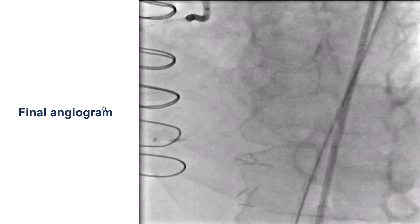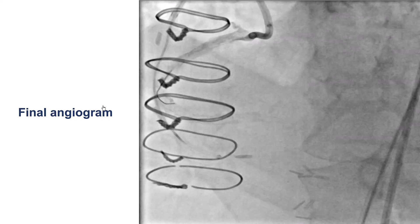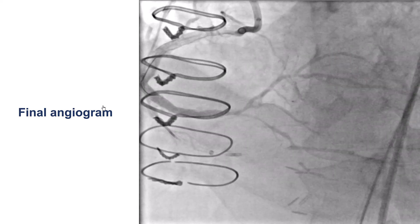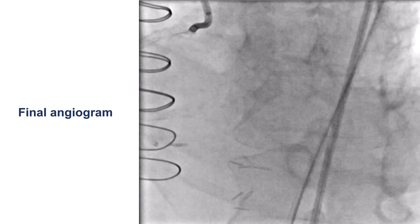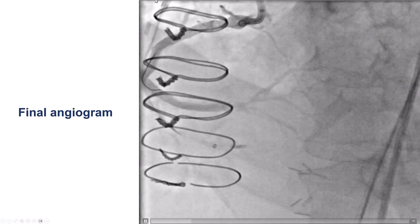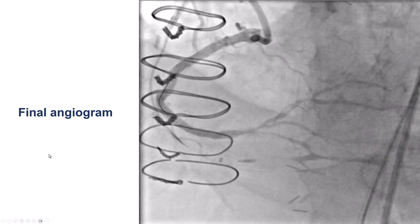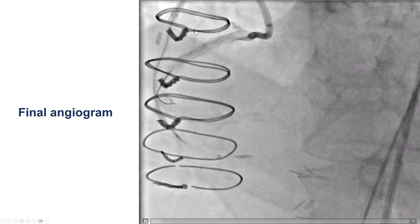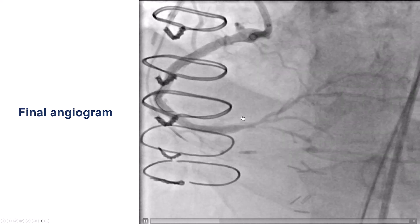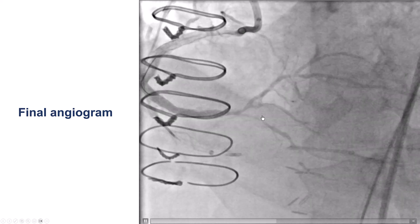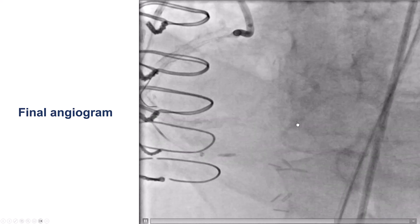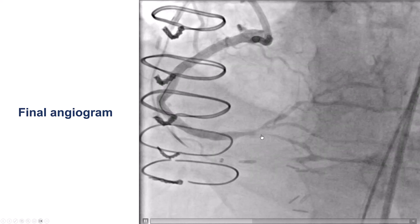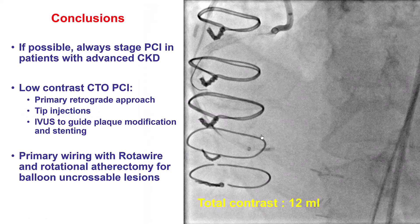We then did just one injection — this was the first full injection during the case — in which we see the final result. There is no perforation, and we have good flow in the right coronary artery. There is diffuse disease distally, but we decided not to treat this for the time being, and the patient did pretty well.